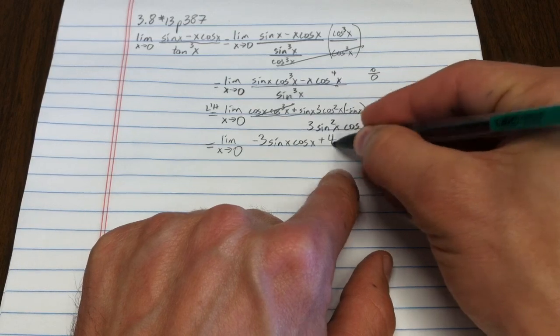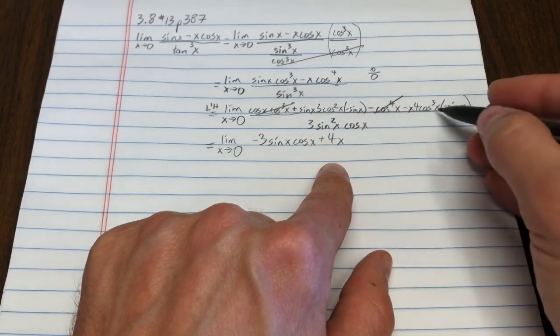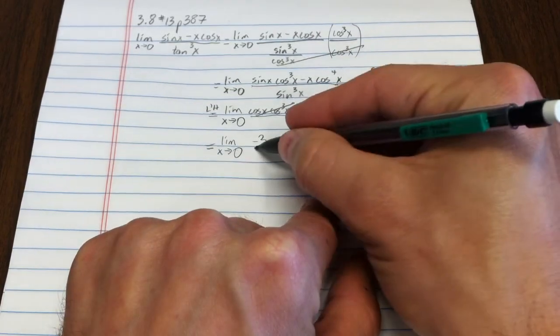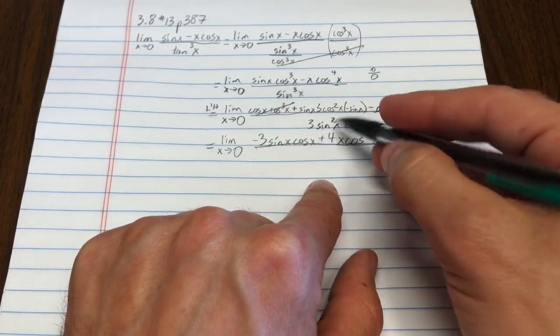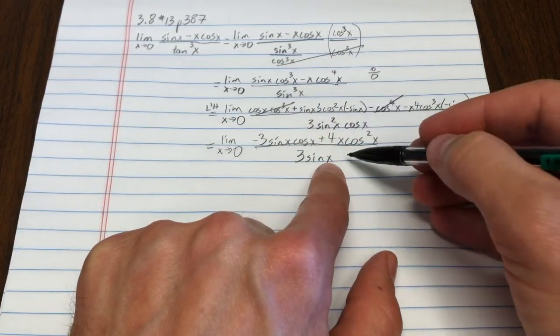This term, double negative, becomes a positive 4x. Take out one sine, one cosine, so that ends up being two cosines. The denominator, one sine, one cosine, 3 sine x. It's a lot simpler here.